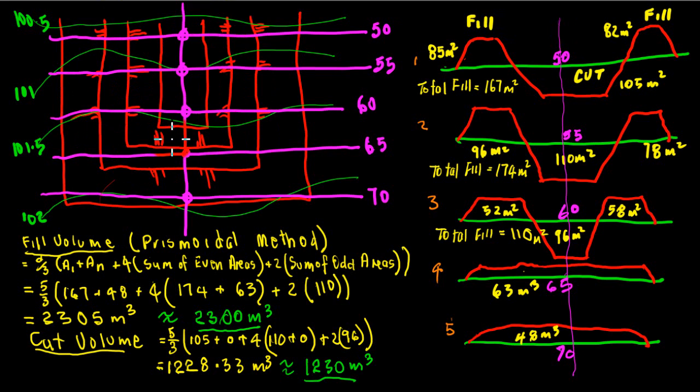Now we're going to use the prismoidal method. One of the key things about the prismoidal method is that it follows on from the trapezoidal or Simpson's rule. It follows on from Simpson's rule, except where in the two-dimensional situation we have the height of the graph, here we have the area of the cross section.